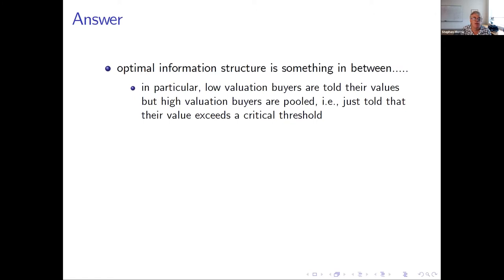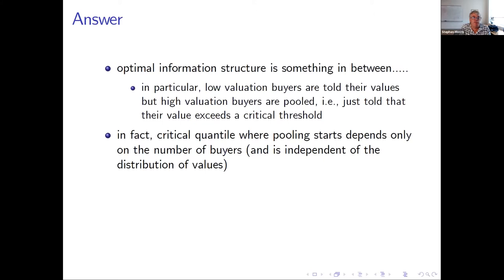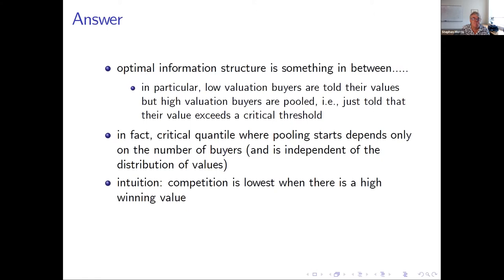A curiosity is that the critical place at which pooling starts is actually a certain quantile of the distribution of values. The critical quantile will depend on the number of buyers, but it will not depend on the distribution of values — so there's a quantile that depends on the number of bidders only. Below the threshold, there's full revelation. The intuition is that competition is lowest when there's a high winning value: when you have a high winning value, you don't expect there to be somebody close to you, so you'll be getting a lot of information rent. Whereas if you have a low value, your competition is likely to be closer, so there's less information rent.